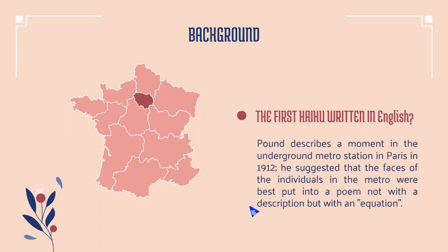Pound describes a moment in the underground metro station in Paris in 1912. He suggested that the faces of the individuals in the metro were best captured not with description but with an equation — an equation of two images. Imagist poets would equate one image with another, or merge two images, placing one over the other, creating a compound that is vague, complex, and where the characteristics of each image are difficult to detect.